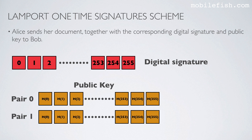Alice sends her document together with the corresponding digital signature and public key to Bob. The digital signature consists of half of the private key.